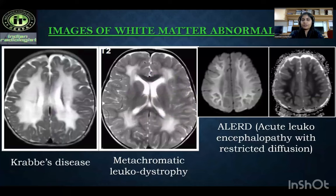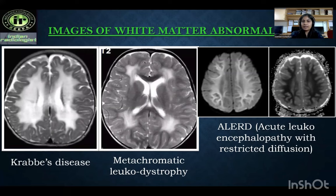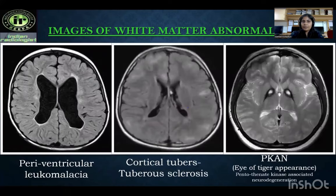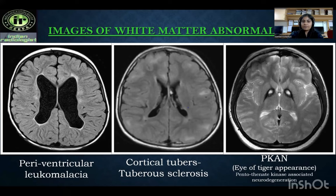Here are some images of white matter abnormalities. First is Krabbe disease, a lysosomal disorder in which periventricular T2 hyperintensity is noted in the occipitoparietal region. Second is metachromatic leukodystrophy, in which symmetrical hyperintensity is noted in the frontal and periventricular white matter. Third is ELAD — acute leukoencephalopathy with restricted diffusion — in which areas of restricted diffusion are seen in both gray and white matter. Fourth is periventricular leukomalacia, showing irregular margins of the body and trigone of the lateral ventricle with ventriculomegaly and loss of periventricular white matter.